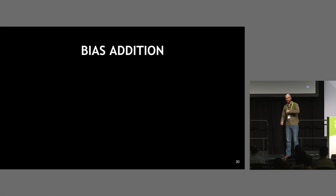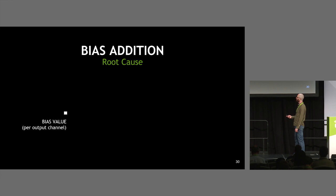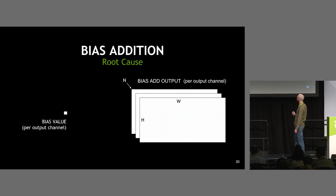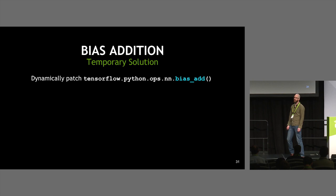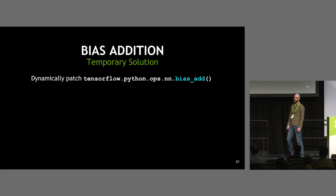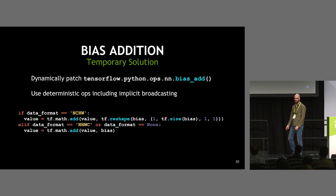With convolution backprop now working deterministically, the next source revealed was bias addition. It's a similar situation: a small single value per output channel for the bias gets added to the large convolution output. During backpropagation, gradients for all those many elements get reduced into a single element per channel, using Atomic Add. The temporary solution is to dynamically patch that operation using different TensorFlow ops that are deterministic — you just import and apply the patch using dynamic programming.